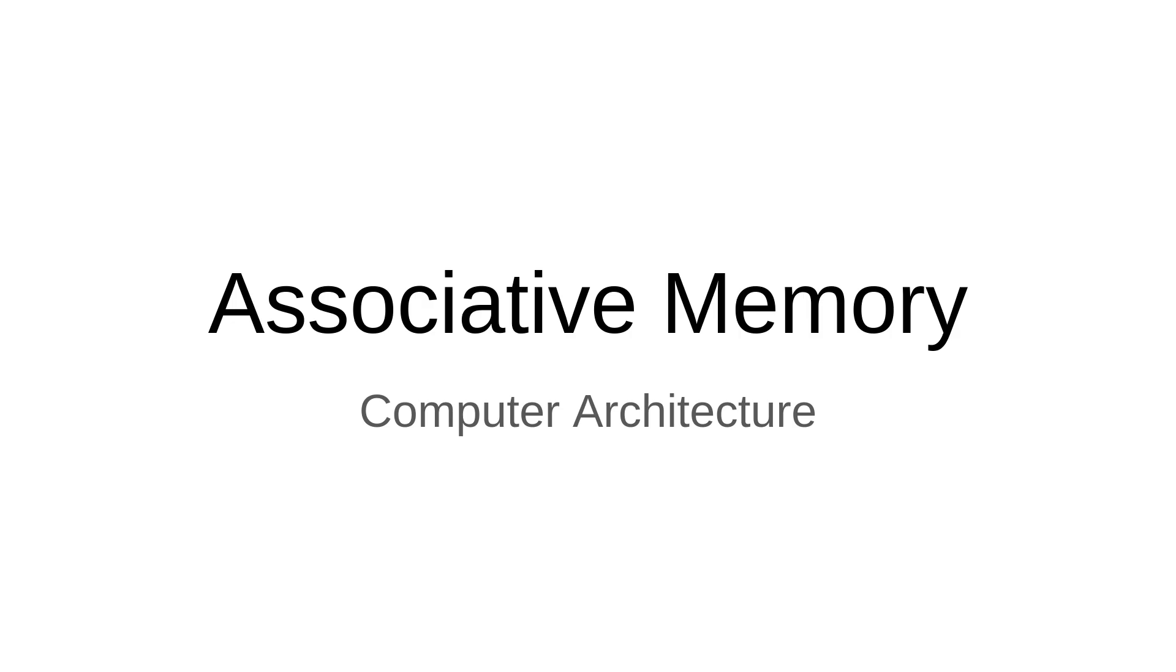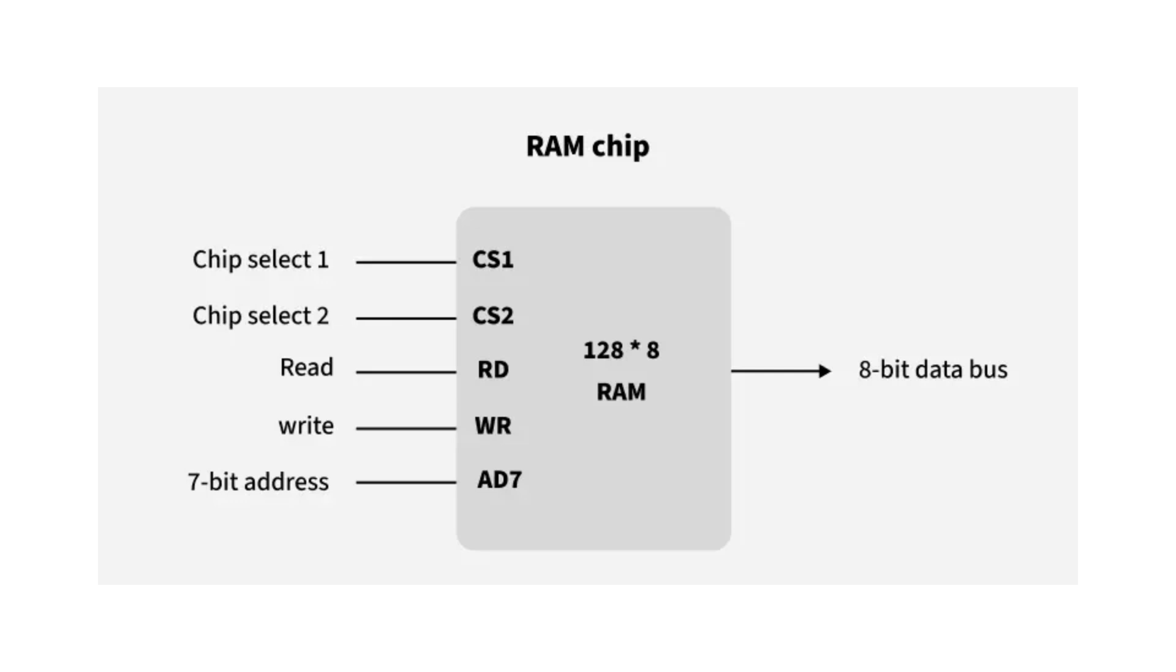So what exactly is associative memory? Traditional RAM uses addresses. You tell it where the data is and it fetches it.